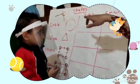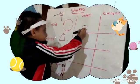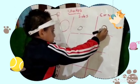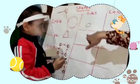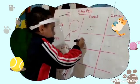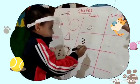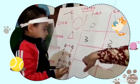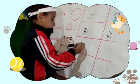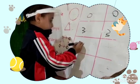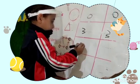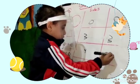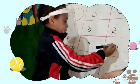How many sides for circle, Ahmad? Zero. How many corners? Okay, triangle — how many sides for triangle? More excellent. How many corners? Four.